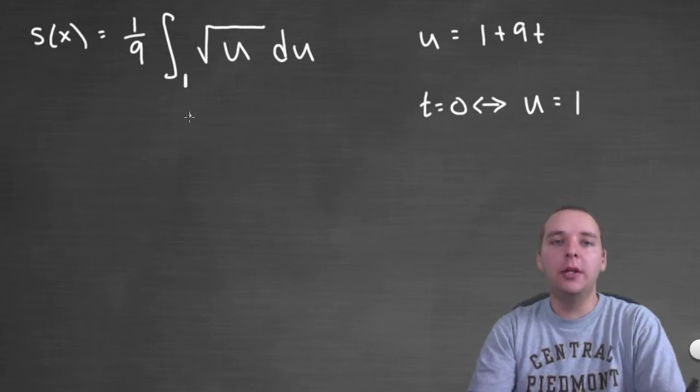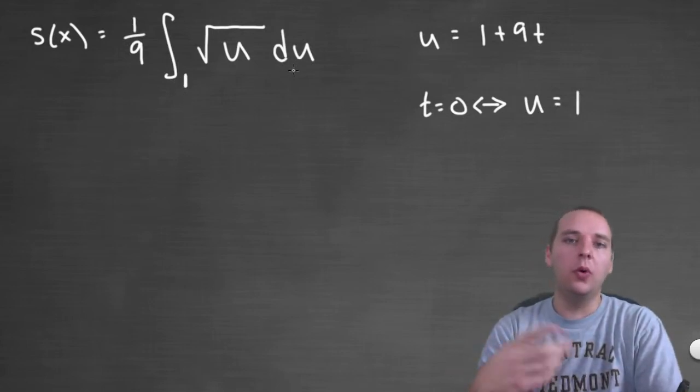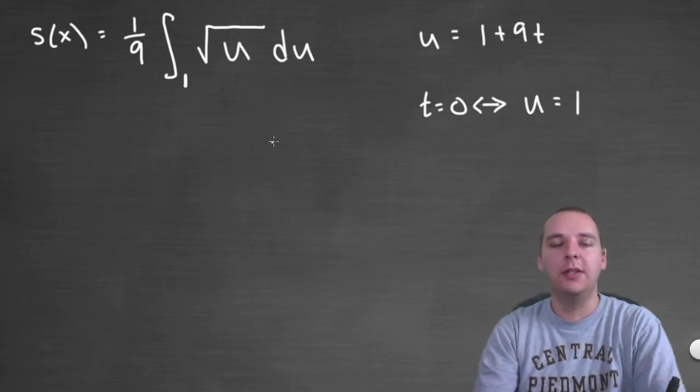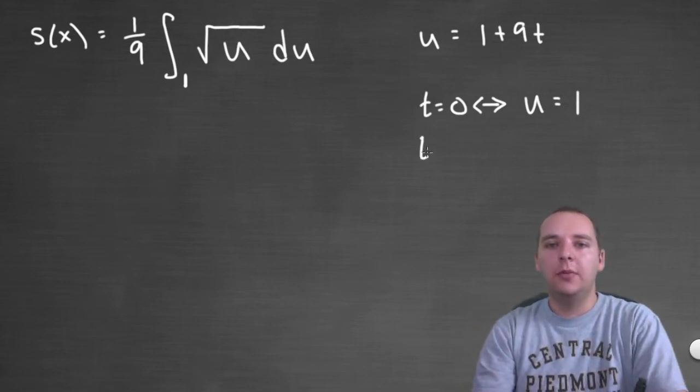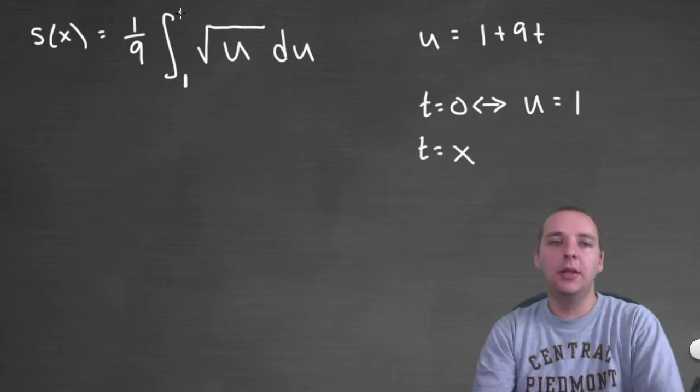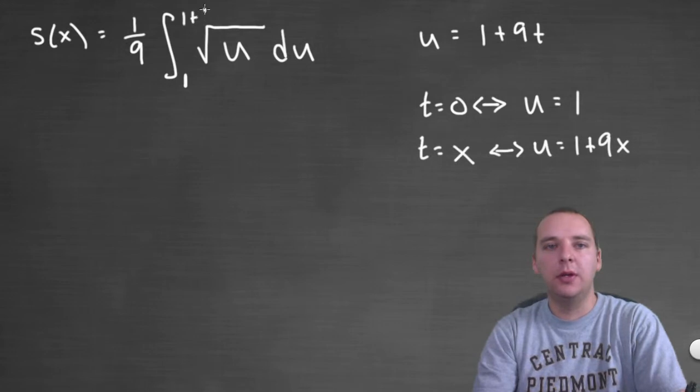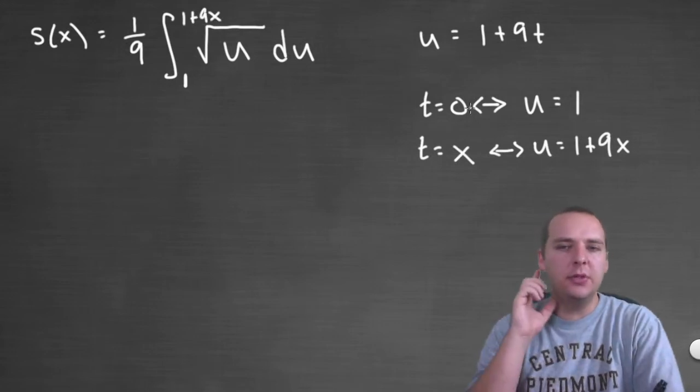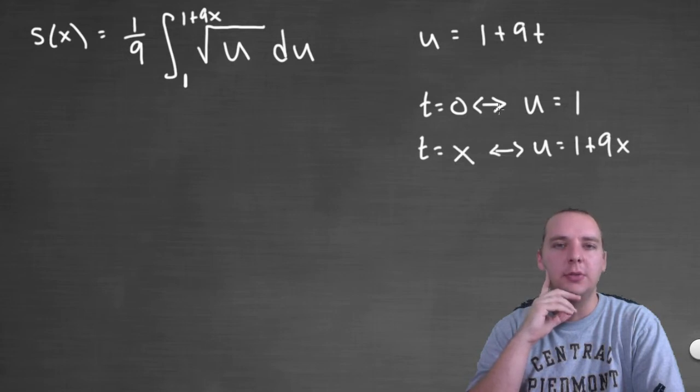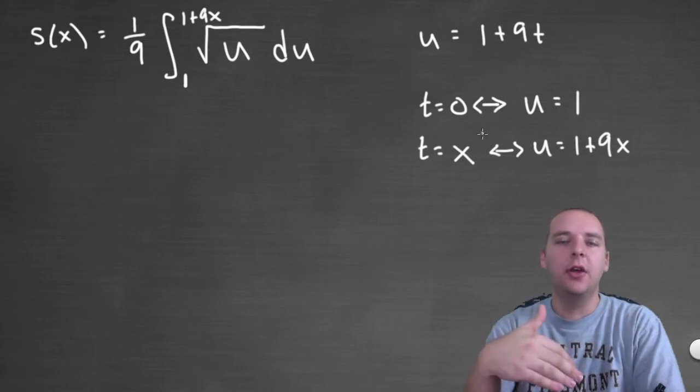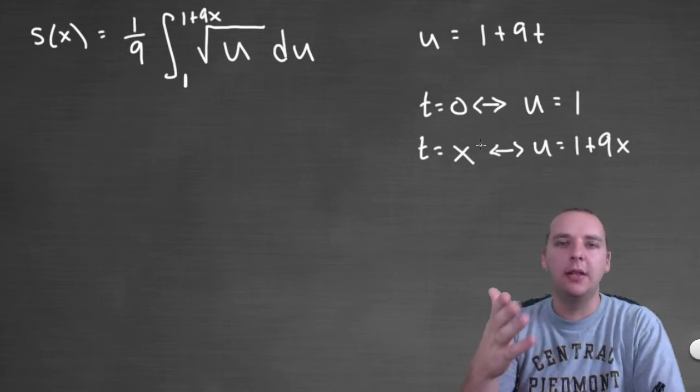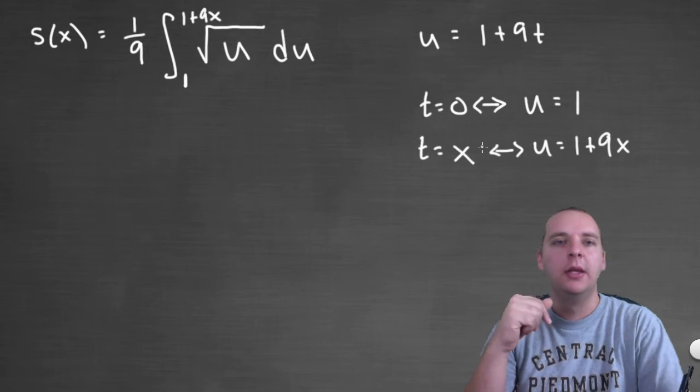And if t was x, the upper limit that it used to be, then u would be 1 plus 9x, and so that's your new upper limit of integration. And now some students struggle with this, when you do u substitution and you convert your limits. Like I said, there is another way to do this, where you don't have to worry about converting the limits. And let me finish this example out, and then I'll briefly make that comment.